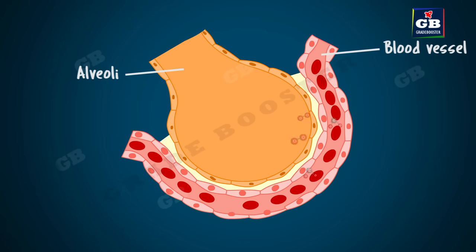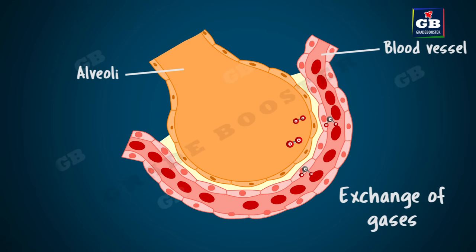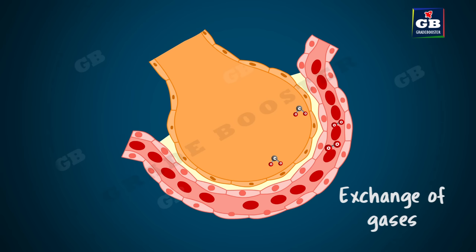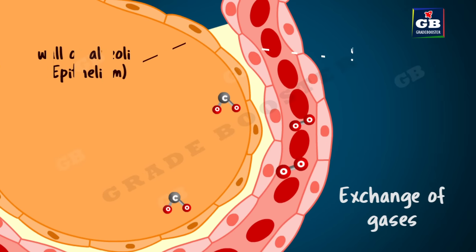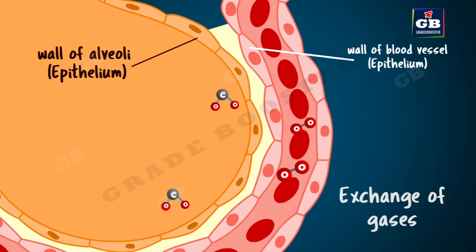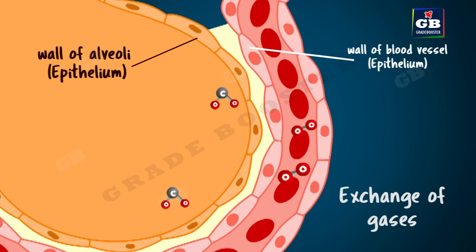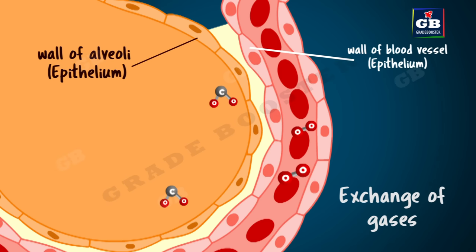For example, the alveoli are the part of the lung where exchange of gases takes place. Oxygen from the air we breathe in enters the blood and carbon dioxide from the blood comes into the alveoli. The oxygen and carbon dioxide cross the walls of the alveoli and blood vessel. The wall of the alveolus and the wall of the blood vessel are made up of a single layer of epithelial cells. So epithelium plays an important role in regulating the exchange of materials between the body and external environment.